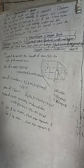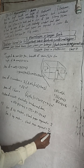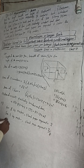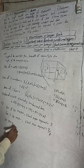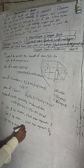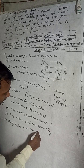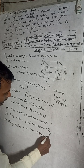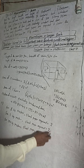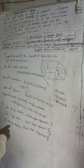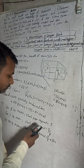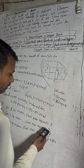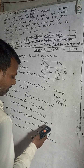For 8 square meters, 2 pieces are required. For 1 square meter, it will be 2 divided by 8. For more area (124 square meters), chart papers will be more, so we multiply: 124 × 2 ÷ 8 = 31. The answer is 31 chart papers.